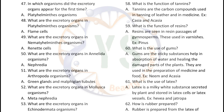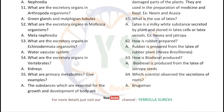What is the use of gums? Gums are sticky substances that help in absorption of water and healing the damaged parts of plants. They are used in the preparation of medicine and also in food, e.g., neem and Acacia. What is the use of latex? Latex is a milky white substance secreted by plants and stored in latex cells or latex vessels, e.g., Hevea and Jatropha. How is rubber prepared? Rubber is prepared from the latex of the rubber plant. How is biodiesel produced? Biodiesel is produced from the latex of Jatropha seeds.